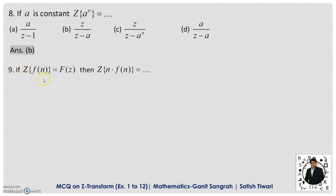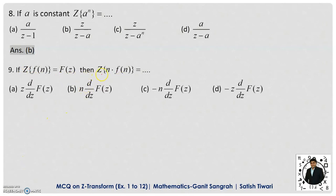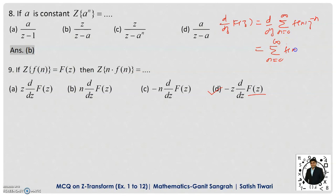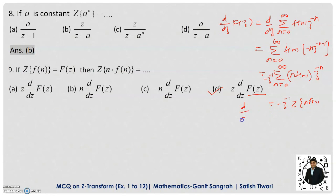Question 9: If Z{f(n)} = F(Z), then Z{n · f(n)} — this is the multiplication by n property of the Z-transform, and option D is correct. To derive it: differentiate F(Z) = summation of f(n)·Z^(−n) with respect to Z, giving summation of f(n)·(−n)·Z^(−n−1). Rearranging: take out −Z^(−1) to get (−Z^(−1)) times Z{n · f(n)}. Solving gives Z{n · f(n)} = −Z · (d/dZ)F(Z). So option D is correct.